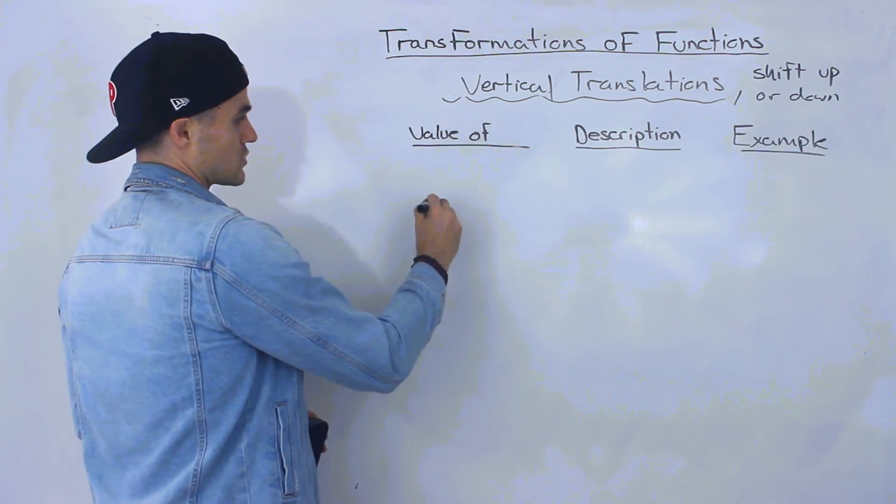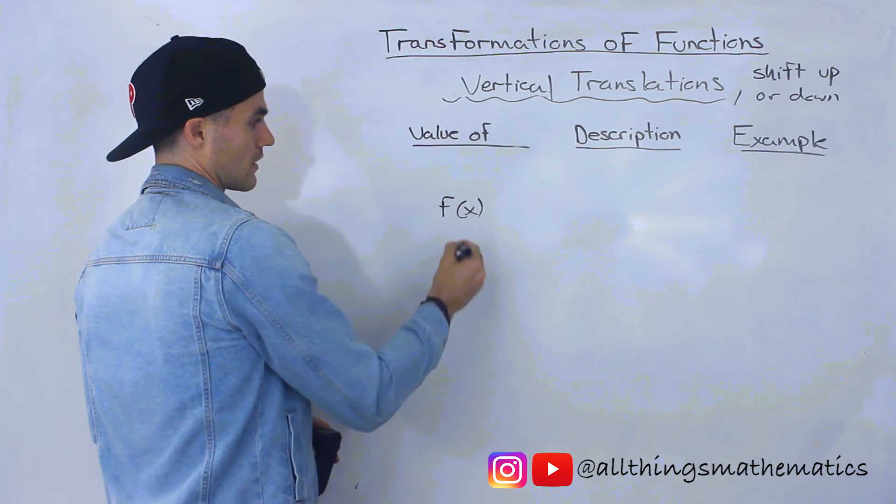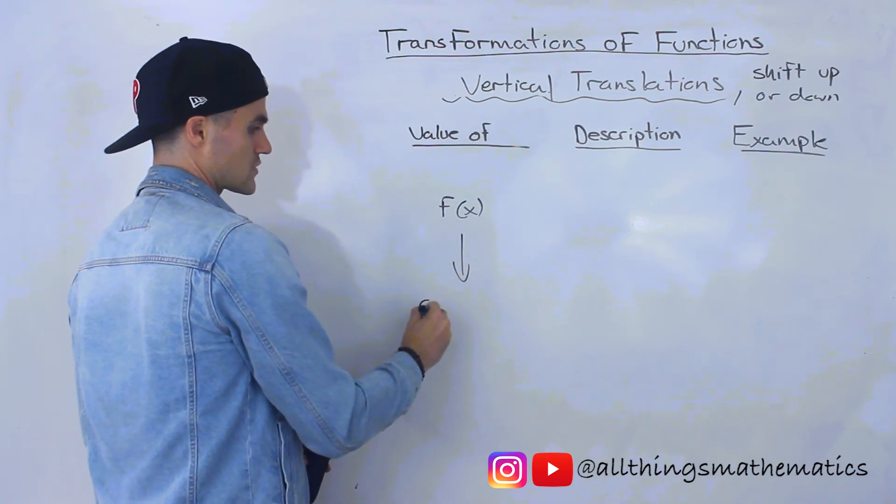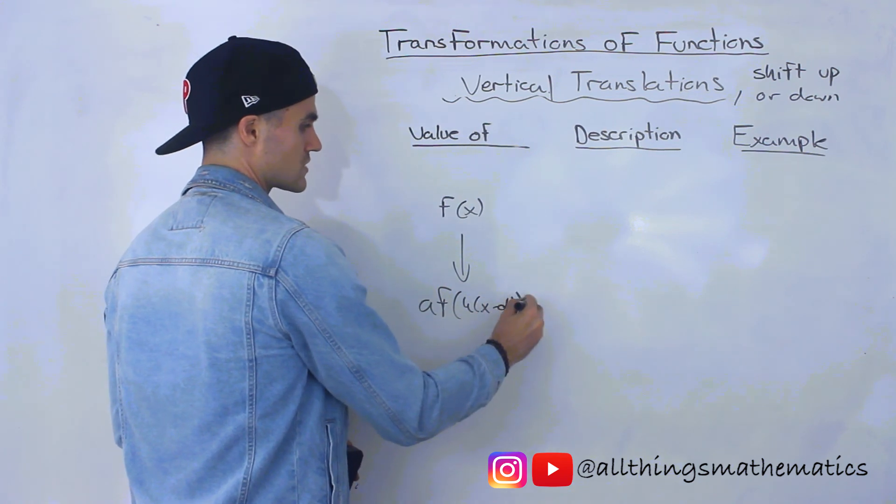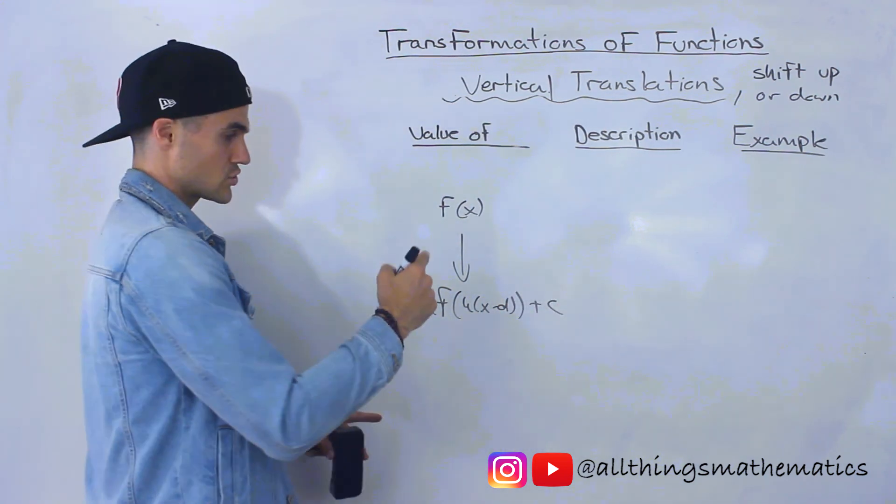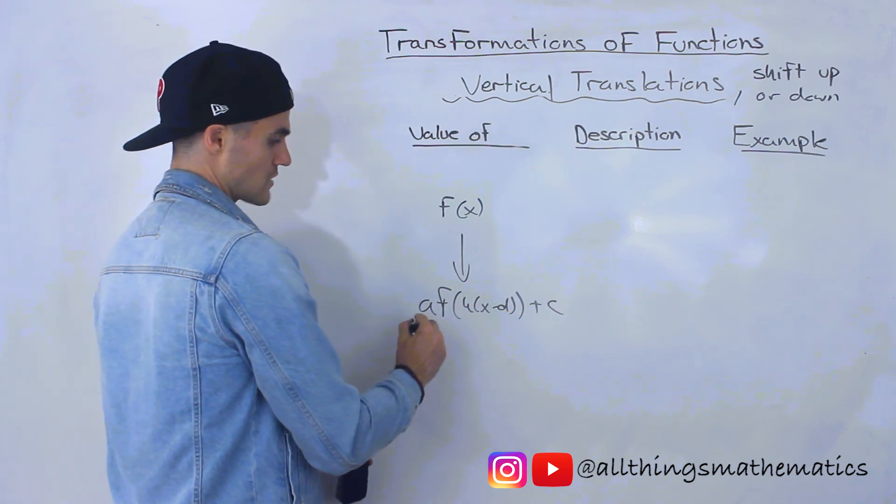So what have we done so far? We have a parent function. We transformed it into this format here. And what have we covered so far from all the transformation values?